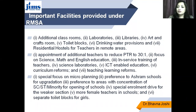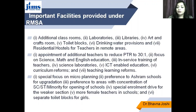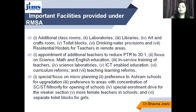Important facilities provided under RMSA include additional classrooms, laboratories, libraries, art rooms, toilet blocks, drinking water provision, and residential hostels for teachers in remote areas. Additional teachers are appointed to reduce the teacher-student ratio to 30:1. There is a focus on science, maths and English education, in-service training of teachers, science laboratories, ICT-enabled education, curriculum reform and teaching-learning reforms. Special focus is given to micro planning, preference to ashram schools, and areas with concentration of SC, ST and minority communities for opening of schools, along with special enrollment drives for weaker sections, more female teachers and separate toilet blocks for girls.